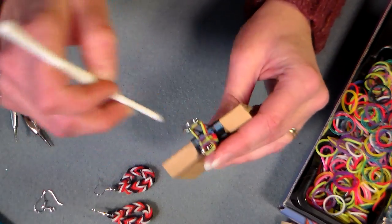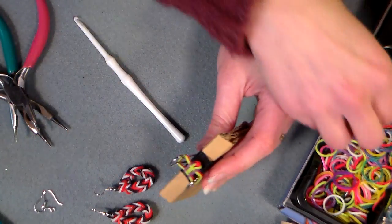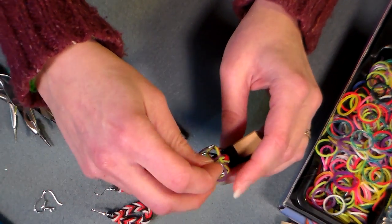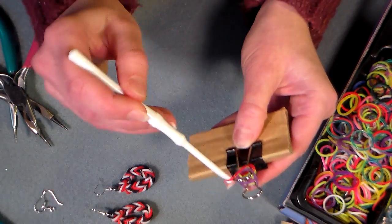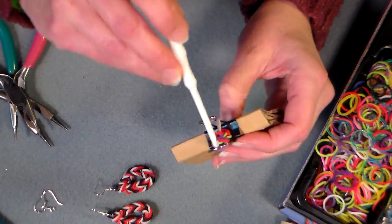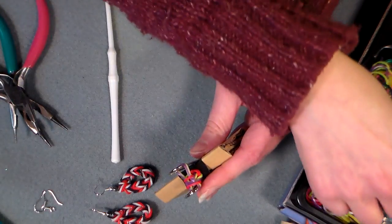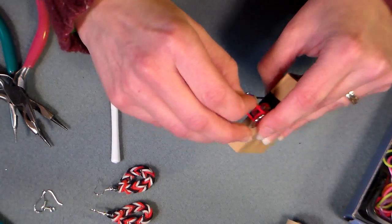And just keep on doing this pattern until you have, until you've made a strip long enough for either a bracelet or an earring. This can go pretty quickly once you get the hang of it, and after a few more rows you'll see how the pattern is coming together.